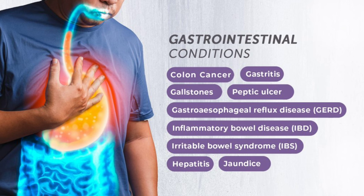To differentiate primary biliary cirrhosis from primary sclerosing cholangitis: PSC is a cholangitis — an infection or inflammation — and its association is with ulcerative colitis. Keep ulcerative colitis in mind for primary sclerosing cholangitis.